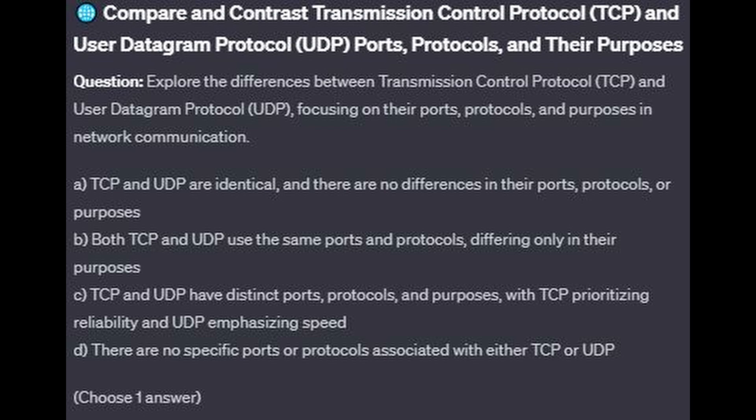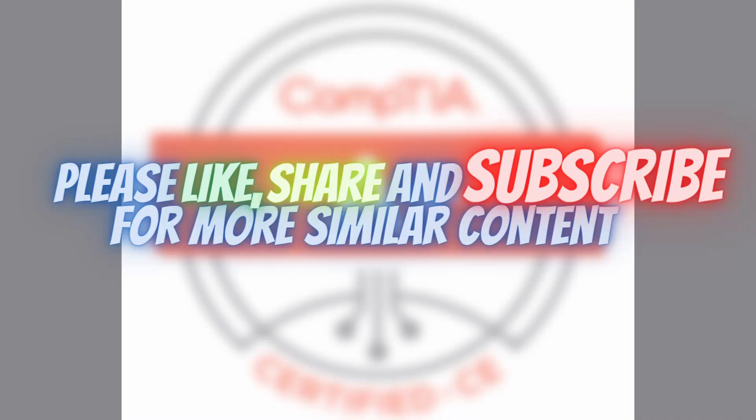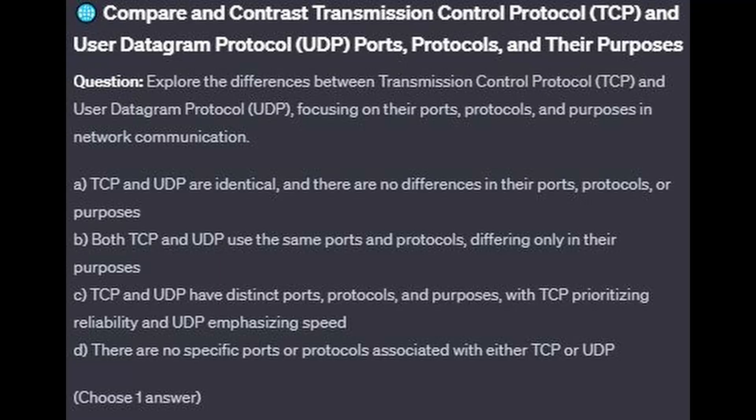And for the last question, question number 10. Explore the differences between Transmission Control Protocol (TCP) and User Datagram Protocol (UDP), focusing on their ports, protocols, and purposes in network communication. Is it A: TCP and UDP are identical, and there are no differences in their ports, protocols, or purposes? Is it B: Both TCP and UDP use the same ports and protocols, differing only in their purposes? Is it C: TCP and UDP have distinct ports, protocols, and purposes, with TCP prioritizing reliability and UDP emphasizing speed? Or is it D: There are no specific ports or protocols associated with either TCP or UDP? Choose one answer.